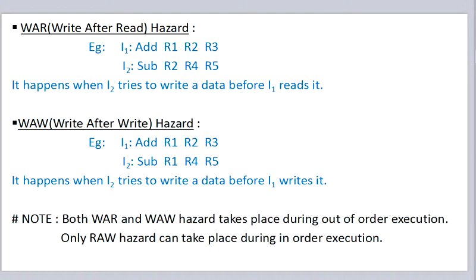Next is write after read hazard. It happens when a second instruction tries to write data before the first instruction reads it. Here i1 is reading r2 and instruction i2 is writing on r2. For an in-order execution, that is when execution takes place sequentially, this hazard never happens, because in sequential execution r2 will be read first and then only r2 is written. But this hazard can take place when execution occurs out of order, that is when instructions are executed non-sequentially.